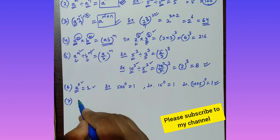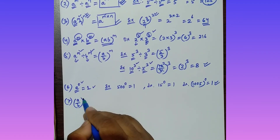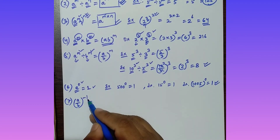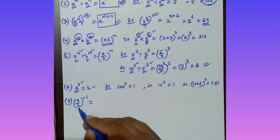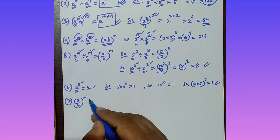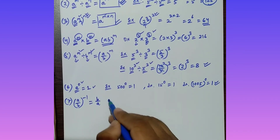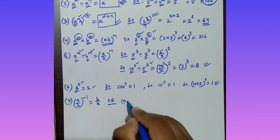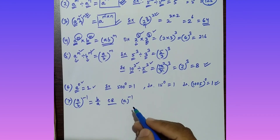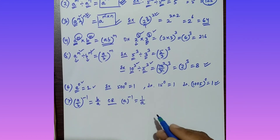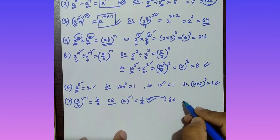The seventh property involves negative exponents. For (a/b) whole to the power minus 1, the formula is: flip the fraction — the answer is b/a. Similarly, a to the power minus 1 equals 1/a. For example, 5 to the power minus 1 equals 1/5.